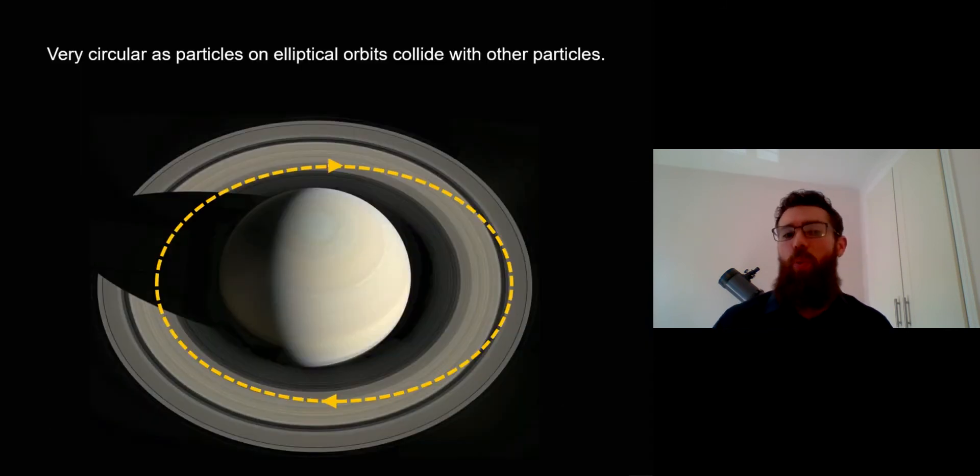The reason why they're generally quite circular is that if you had a single particle - remember all of these particles in the rings are orbiting kind of on their own, they're like very small moons - and if they're on an elliptical orbit they're going to pass into the path of other particles. They will likely have a collision.